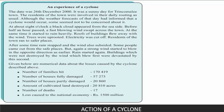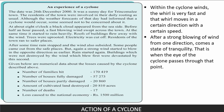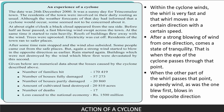Here is an article about an experience of a cyclone. The major effects of a cyclone are heavy rain and fast blowing wind. Within the cyclone, the whirl is very fast and moves in a certain direction with a certain speed. After a strong blowing of wind from one direction comes a state of tranquility — that is when the eye of the cyclone passes through that point. When the other part of the whirl passes, a speedy wind blows in the opposite direction.